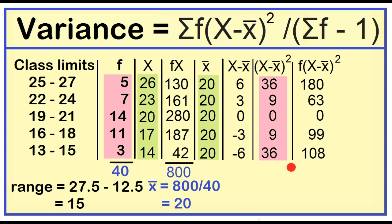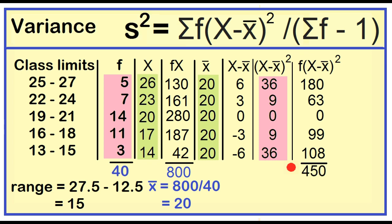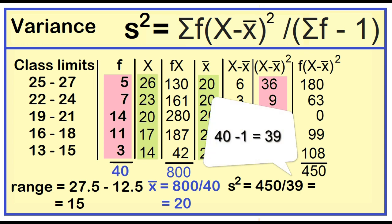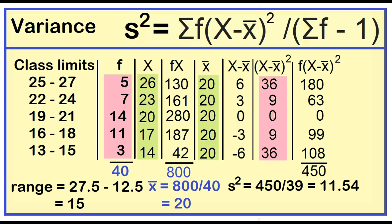Then add 180 plus 63 plus 0 plus 99 plus 108, which equals 450. Variance equals 450 divided by 39. Variance equals 11.54.